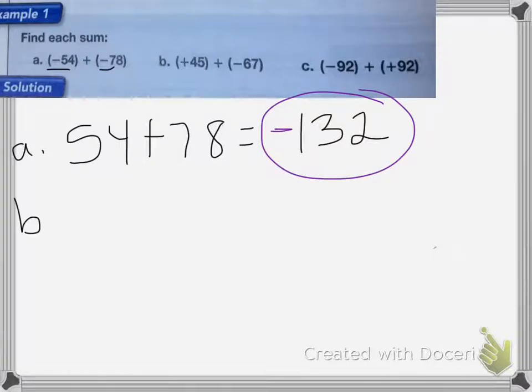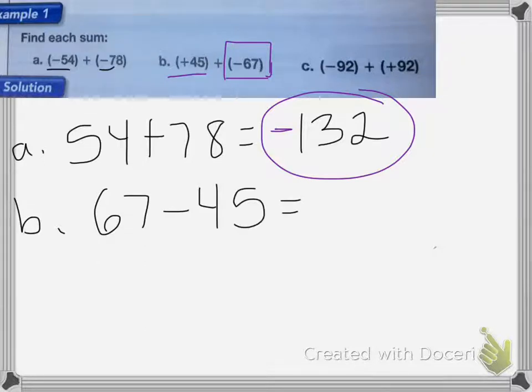For the second one, we have positive 45 plus negative 67. Since negative 67 is bigger, I know my answer is going to be negative. So I'll take 67 and minus 45 from it. 67 minus 45 equals 22. Now remember, since the negative 67 is bigger, my answer has to be negative 22.